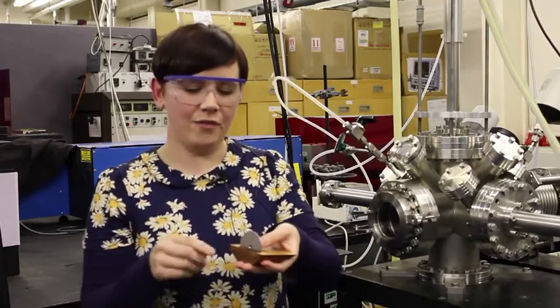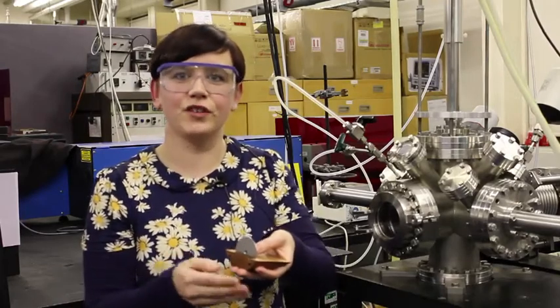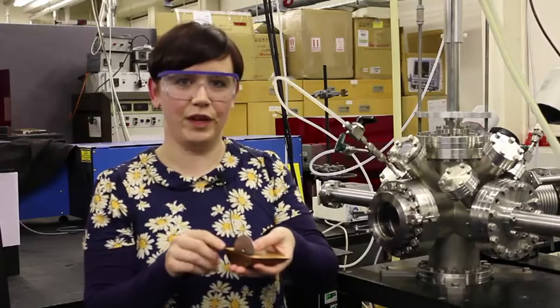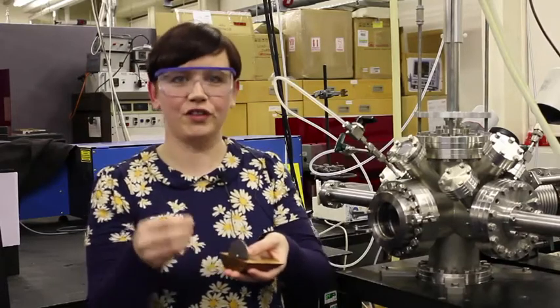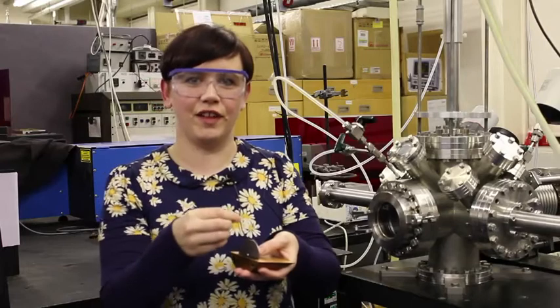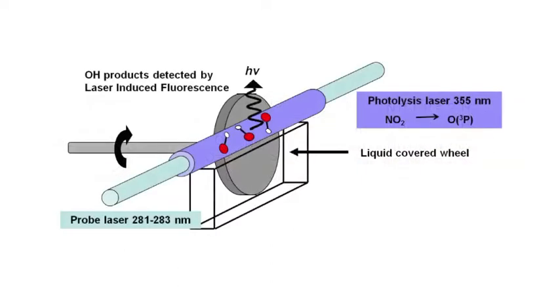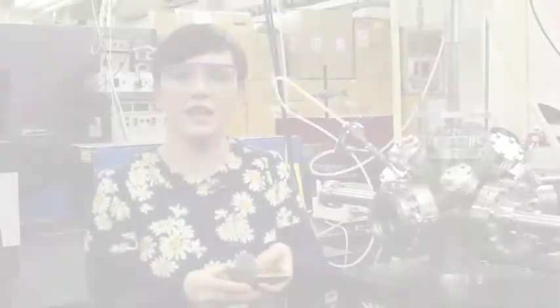Our oxygen atoms are generated by photolysis of a suitable precursor above the wheel. Some of the oxygen atoms formed will then travel to the liquid surface, abstract the hydrogen from it, and then return back to the laser axis as OH, where we detect them with a second laser pulse by laser induced fluorescence.